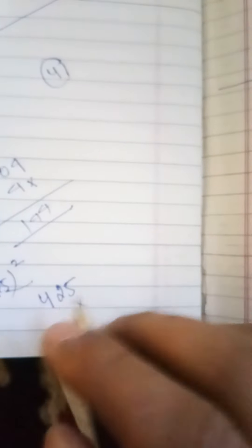25 squared. Again, 5 squared is 25. Right now I'm going to do the square of 4. Then leave 1 digit.